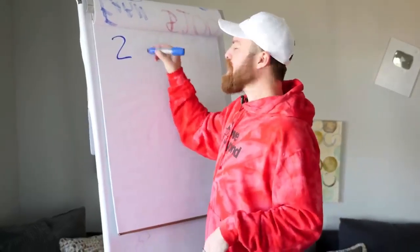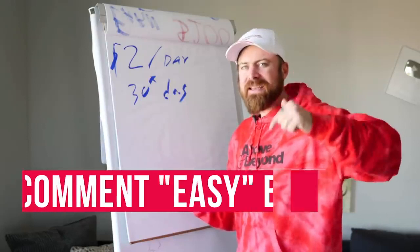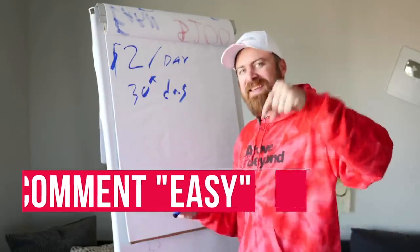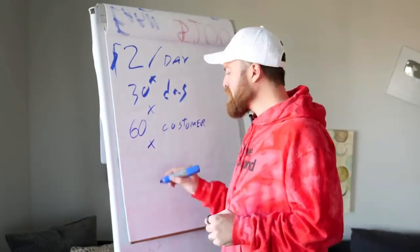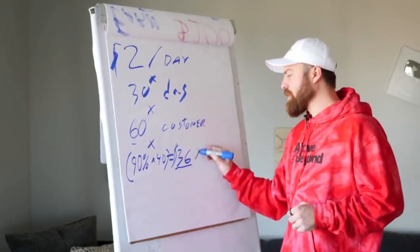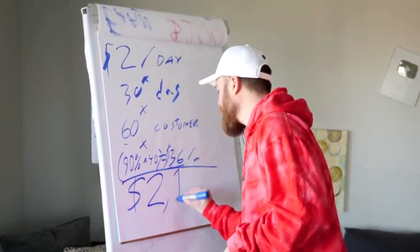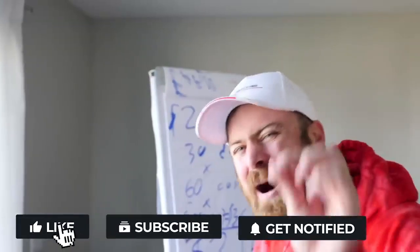Imagine if you just got 2 people every single day to spend $1. Let's do the math: 2 people a day times 30 days is 60 customers. Hopefully you're good enough to get 2 people to spend $1 — type in 'easy' in the comments if you think so. The recurring revenue is 90% of $40, which is $36. So 60 customers times $36 a month — that leaves you with $2,160 in monthly recurring revenue. If you can get 2 people to spend $1 every day, you will be getting roughly over $2,000 a month in recurring revenue.